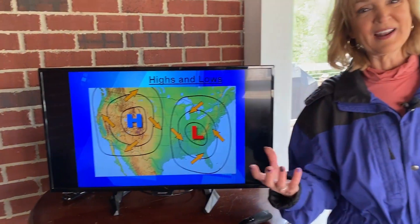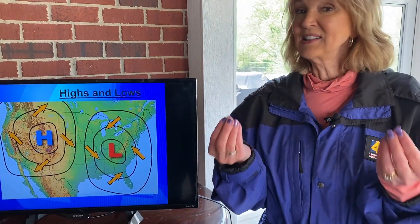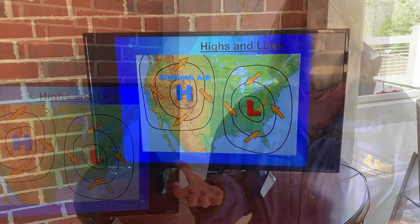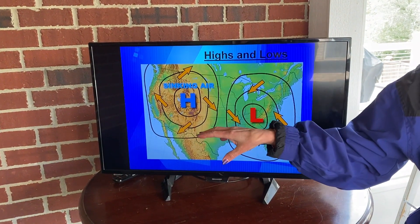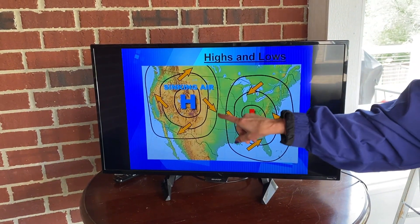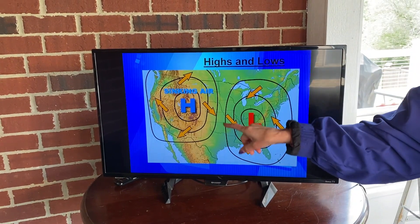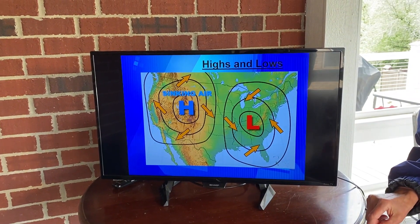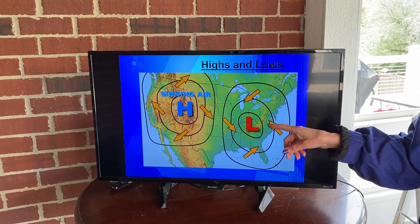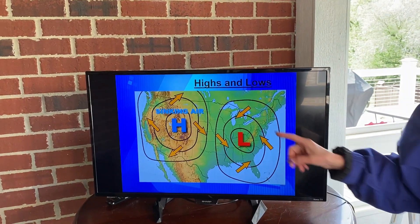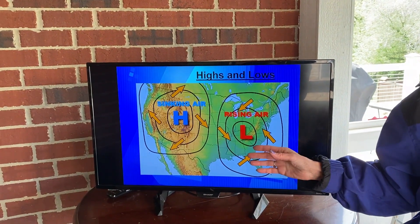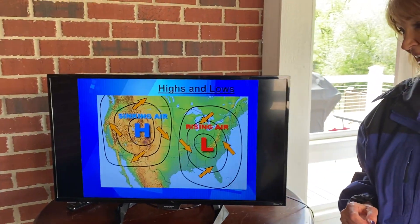Highs and lows — when we think about highs and lows, we're talking about high pressure and low pressure. In the simplest terms, that is the weight of the air. When we think of high pressure, we think of heavier air, sinking air. We also think of the winds blowing around that high in a clockwise motion, just like the hands of a clock. And when we think about low pressure, the winds are blowing the opposite direction, counterclockwise, and that air is rising because it's lighter air.